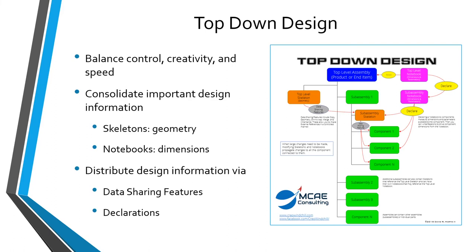The fourth and final method of building design intent — and actually the best method — is top-down design. Top-down design is the best way to balance control, creativity, and speed in product development, because those three qualities are often competing against each other. With top-down design, we consolidate important design information at the top levels of our assembly, whether it's the top-level product or one of the end items. The two main tools for this are skeletons and notebooks.